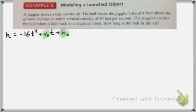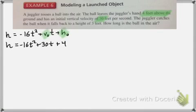So it says the ball leaves the juggler's hand four feet above the ground. So that would be our initial height. And it has an initial velocity of 30 feet per second. So that's our initial velocity. So now we have our equation set up. This is our quadratic equation.